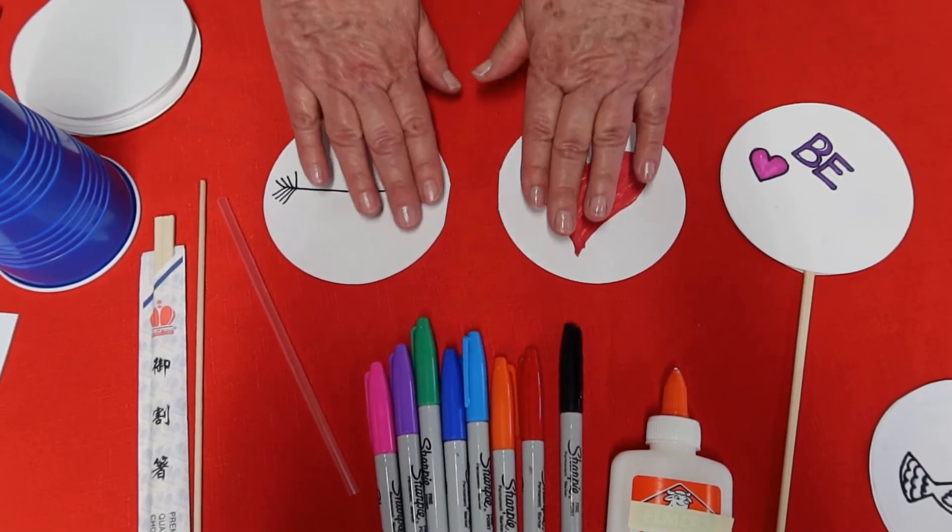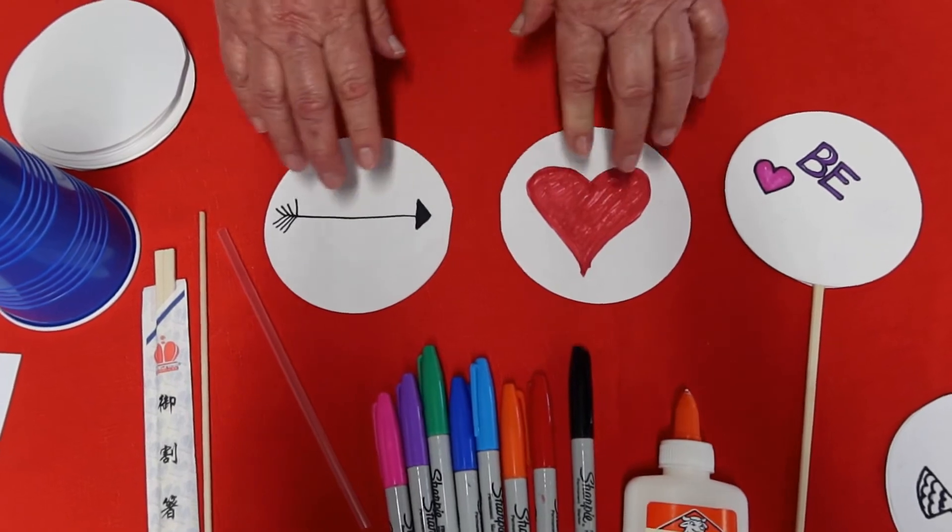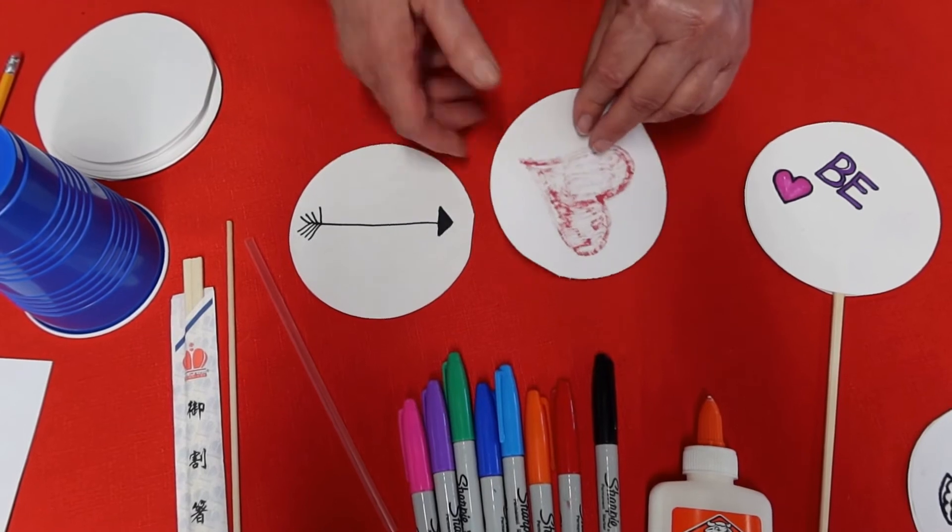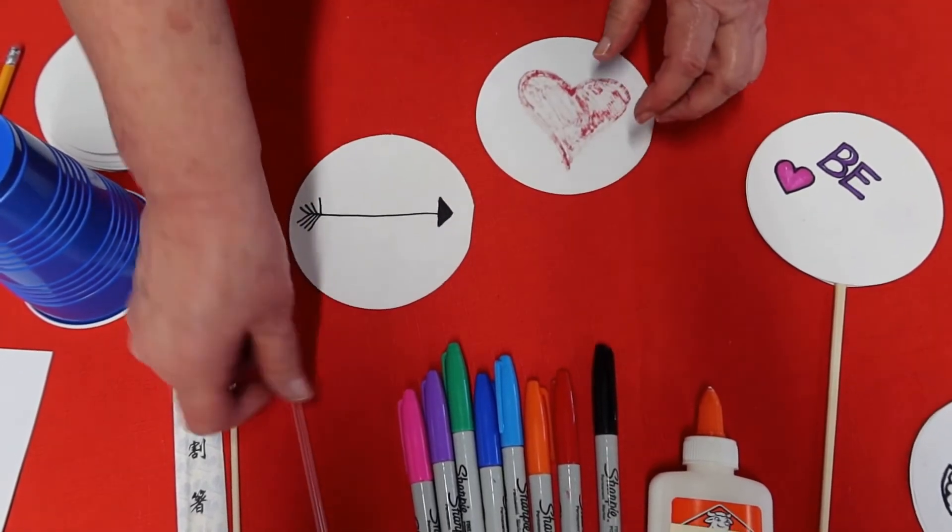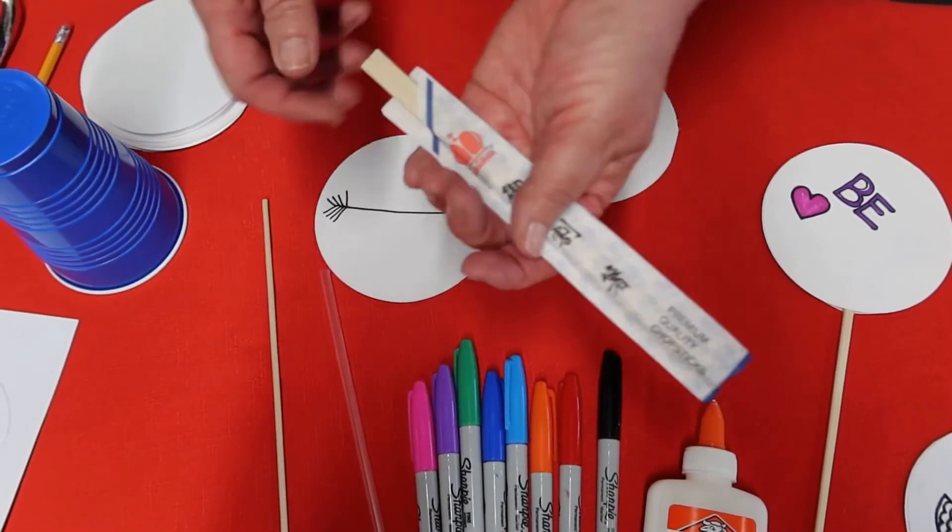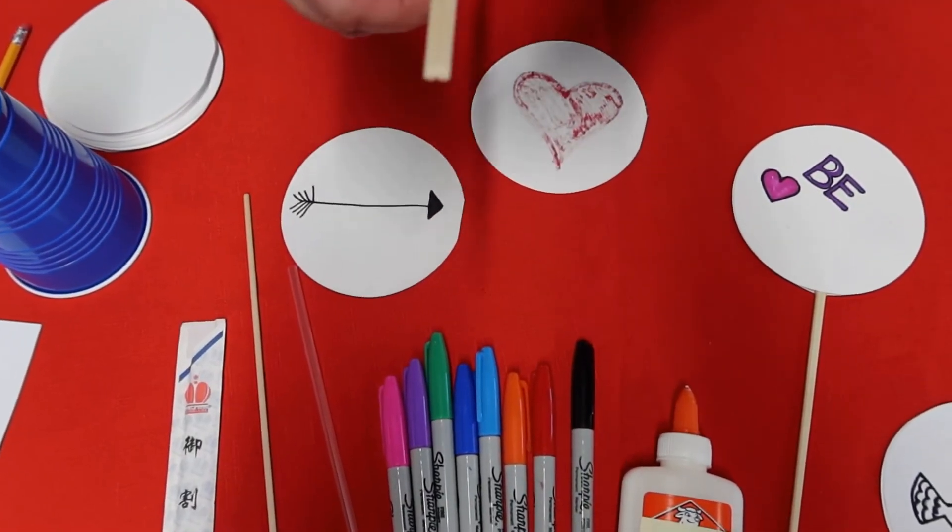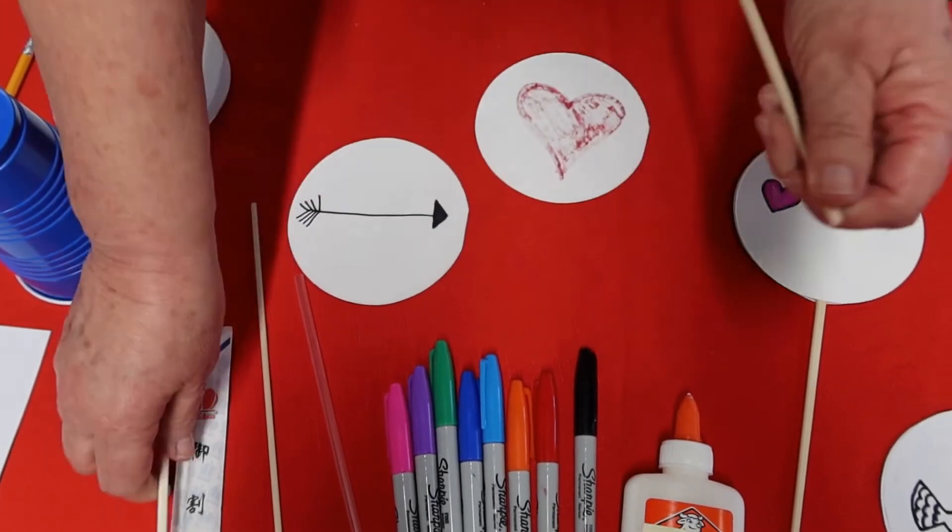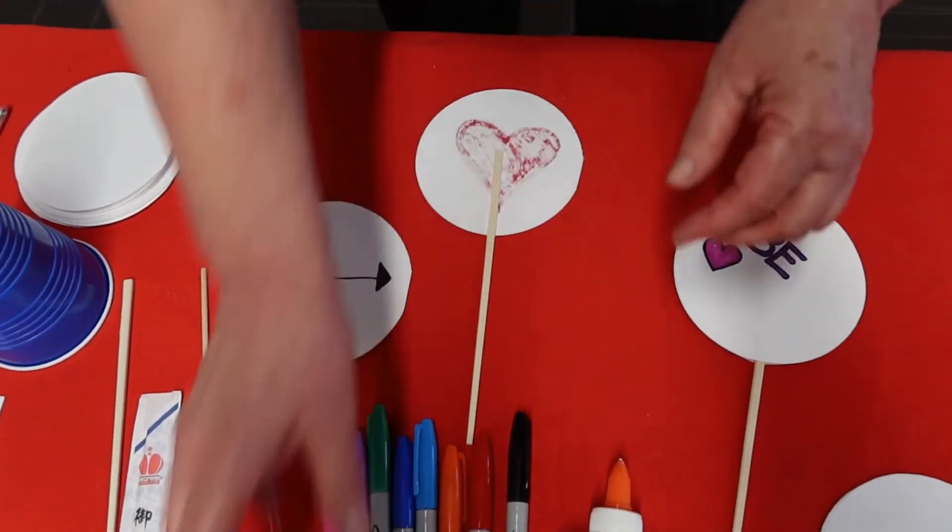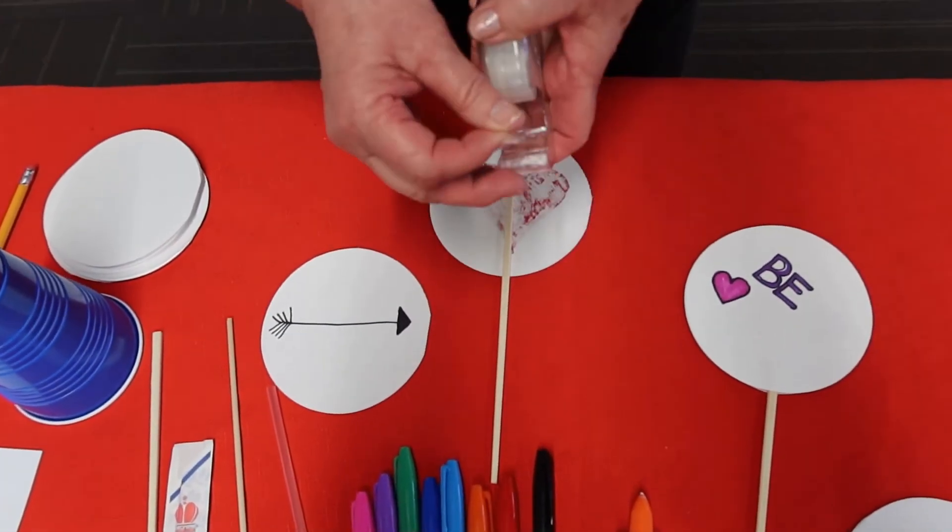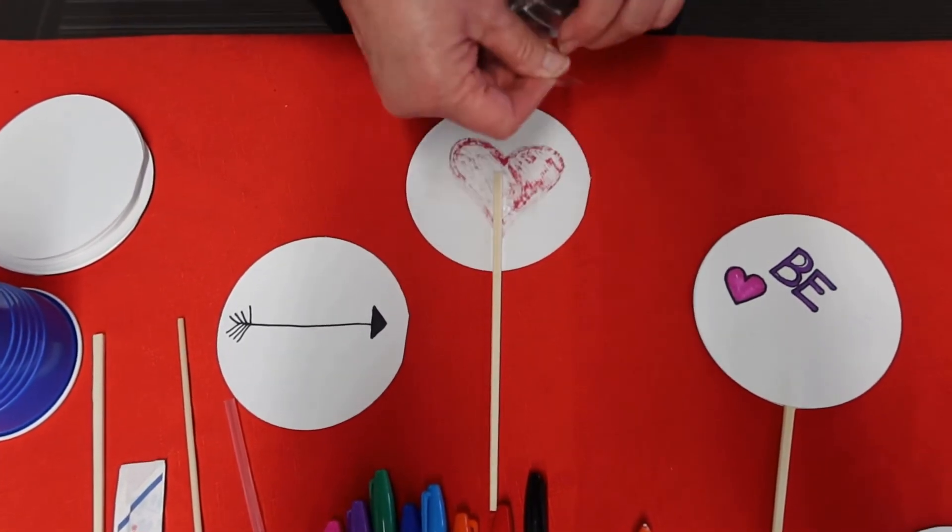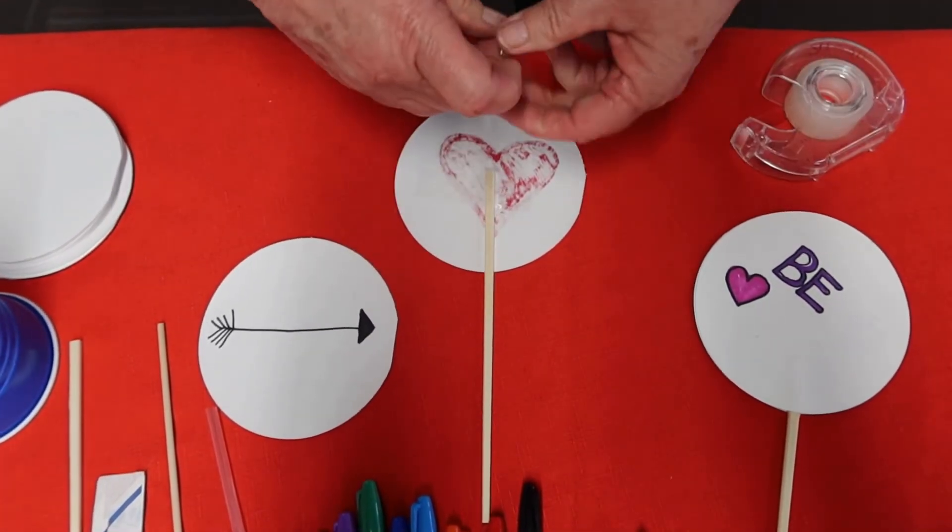After you have your two circles, turn it over. You can use a straw or a dowel. In my case, I used mainly chopsticks. Lay the chopstick right in the middle, and then take some tape and just tape it down so that it's secure.